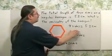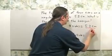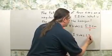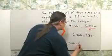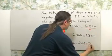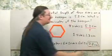Well, if four sides is 5.2 centimeters, just divide this by four. And that's going to give you 1.3 centimeters. So the perimeter is going to be six times this result, and you're going to get 7.8 centimeters.